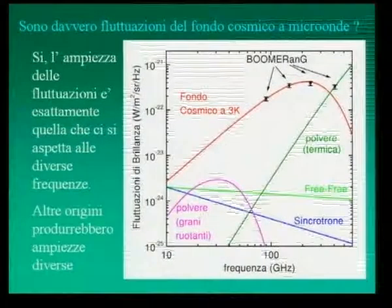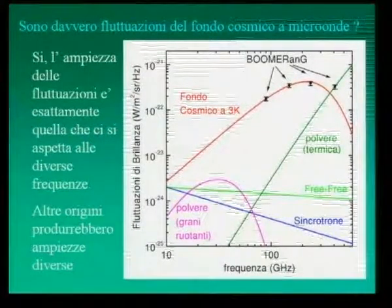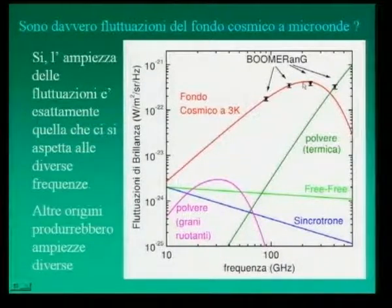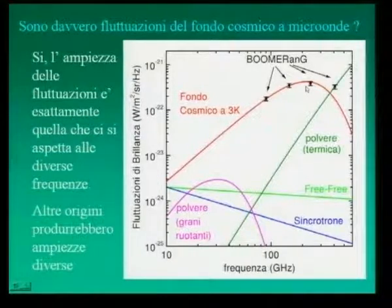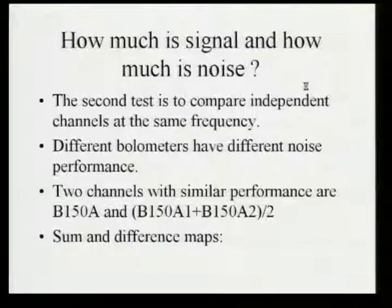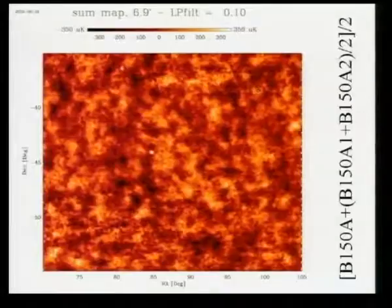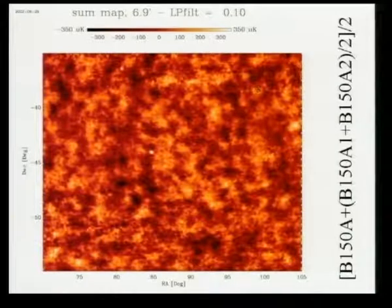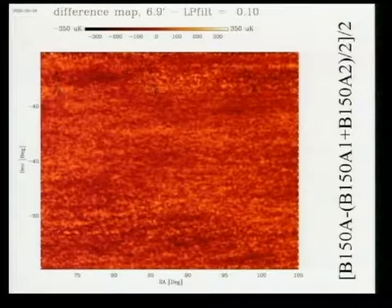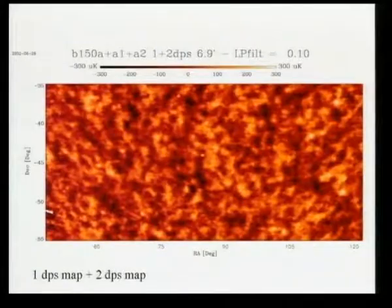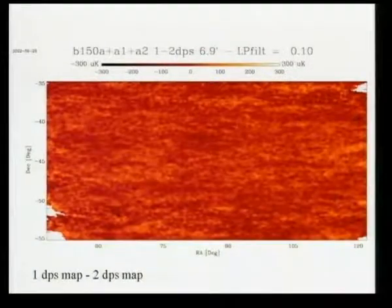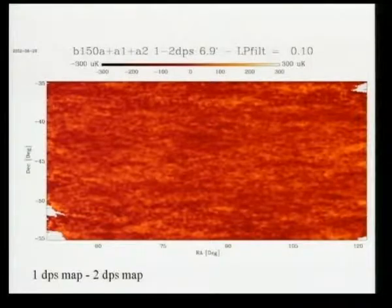By measuring at four different wavelengths, we were able to show that what we have seen is definitely cosmic microwave background and not something else, because it has the right spectrum. We were also able to show that the signal — the map we see — is much more than the noise of the measurement, and that there are no systematic effects. We compared, for example, a map taken in the first week to a map taken in the second week when the experiment had drifted by 5,000 kilometers, and found the two maps were very similar.